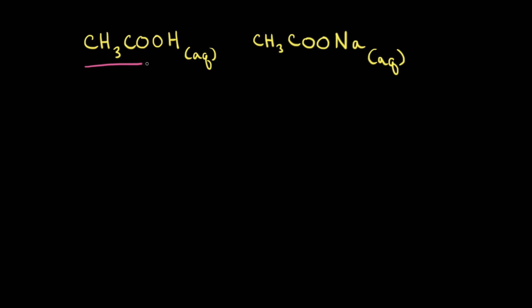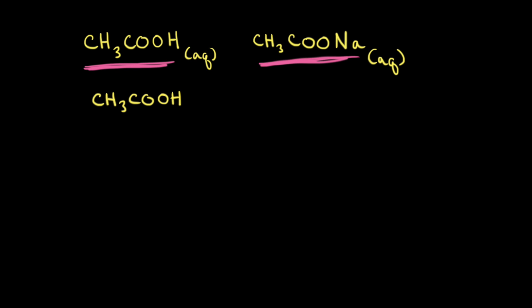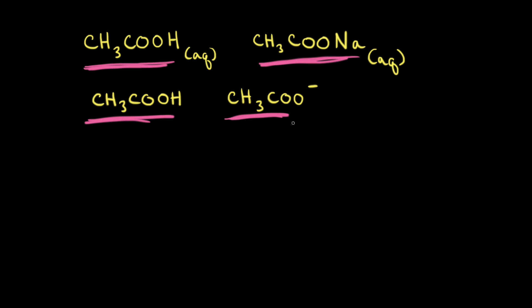Let's say we have an aqueous solution of acetic acid and an aqueous solution of sodium acetate with equal moles of each. Mixing these two solutions together would form a buffer solution. Acetic acid is a weak acid and only partially ionizes in aqueous solution, so we have mostly acetic acid, CH3COOH. Sodium acetate is a soluble salt that dissociates completely, giving sodium cations and acetate anions, CH3COO-. The acetate anion is the conjugate base to acetic acid, so in aqueous solution we have a weak acid and its conjugate base — a buffer solution.